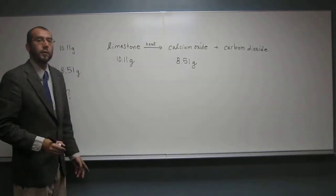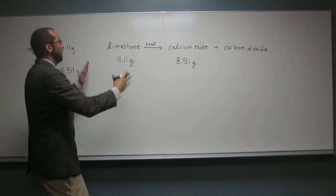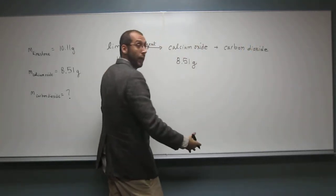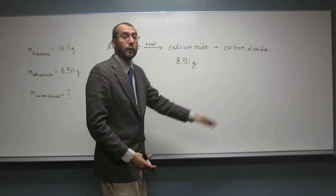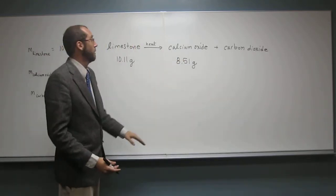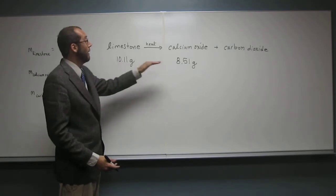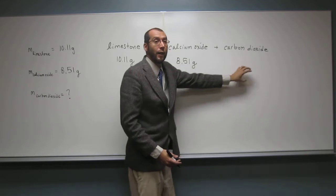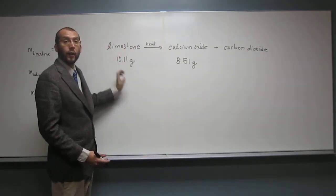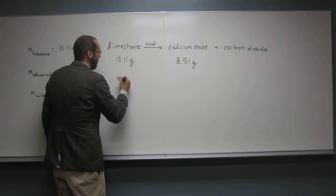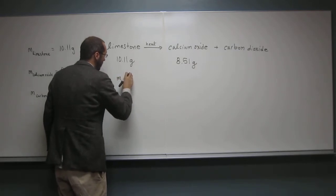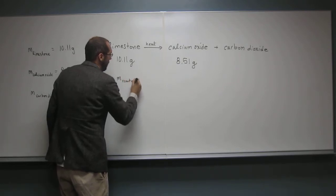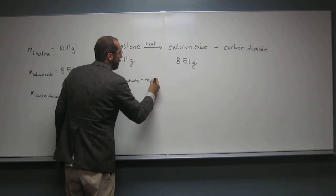So remember, law of conservation of mass says the reactant's mass has to add up to the product's mass. So the total reactants has to equal the total products. Does it equal that right now? So does 10.11 equal 8.51? So we need that mass of carbon dioxide to make it equivalent here. In other words,